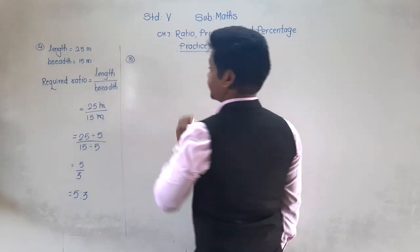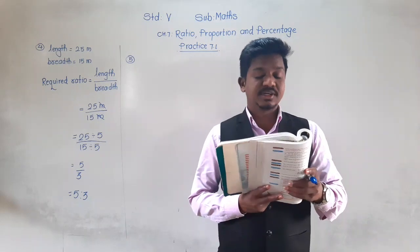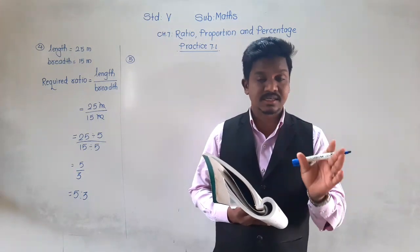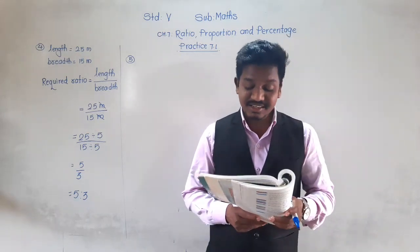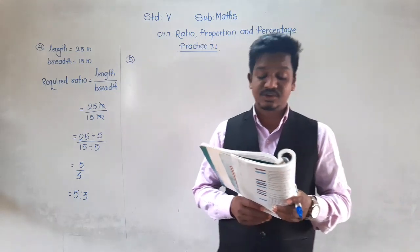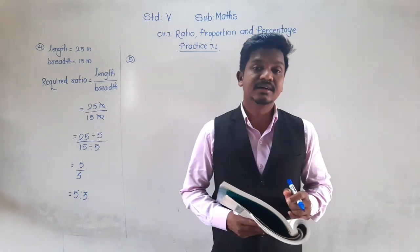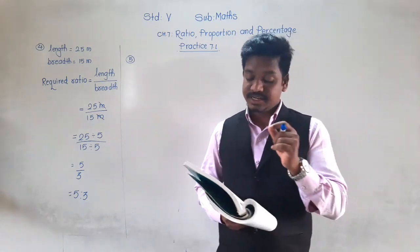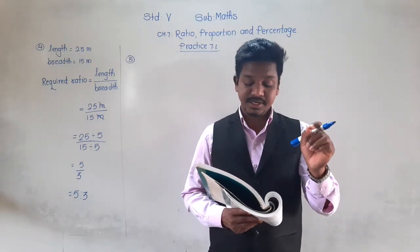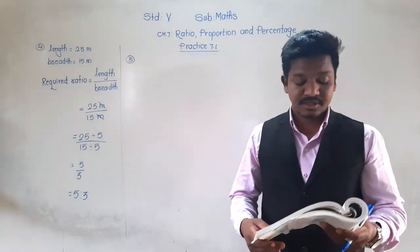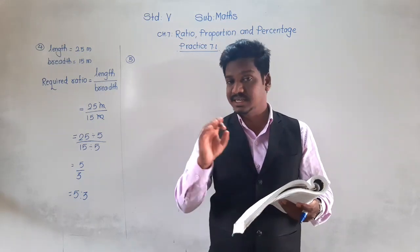Question number 5: out of 40 children in a class, 25 are boys and the remaining are girls. Find the ratio of: A) boys to girls, B) boys to total number of children, and C) total number of children to girls. So these three ratios we have to find.